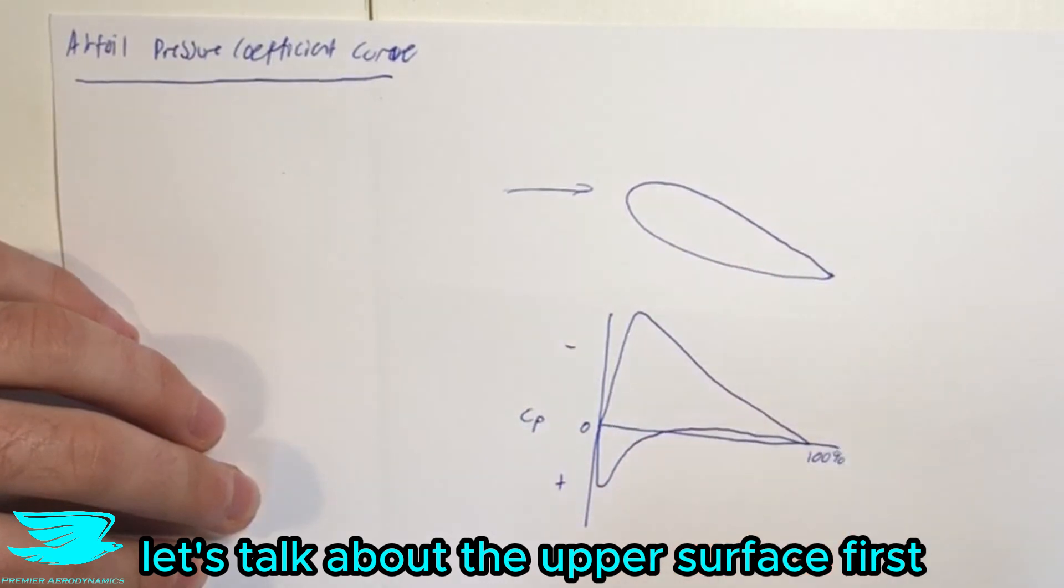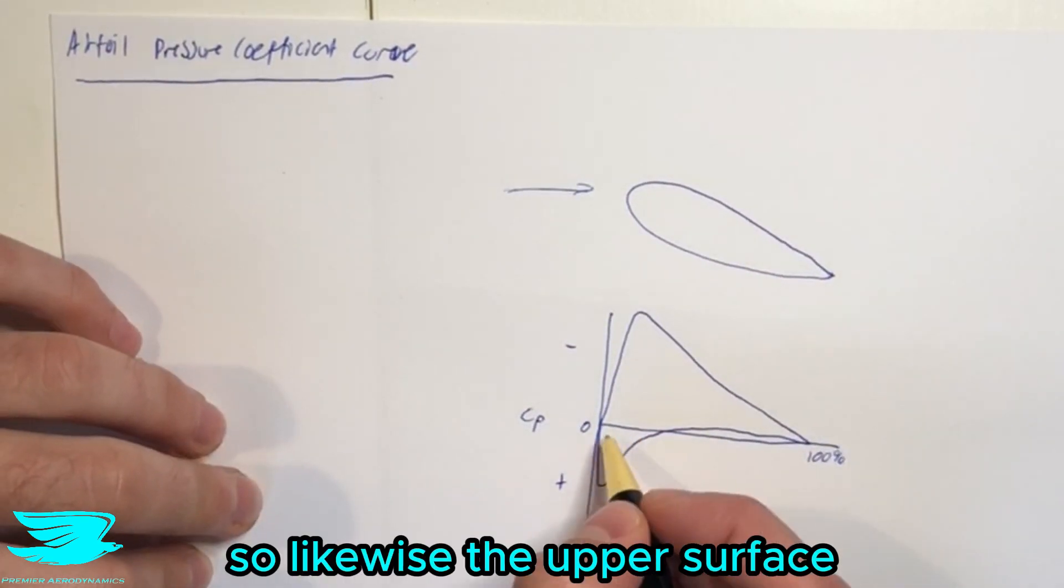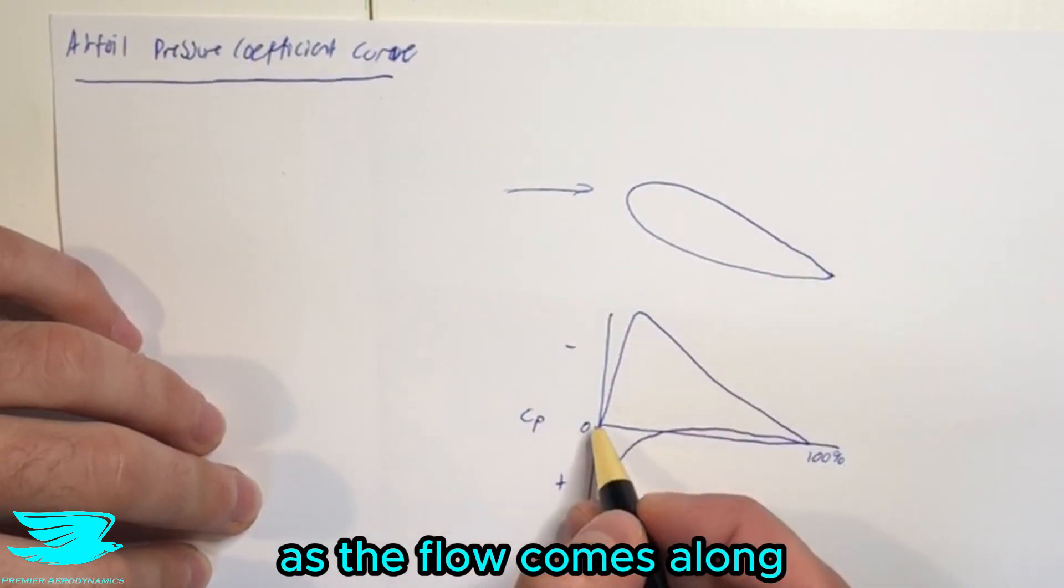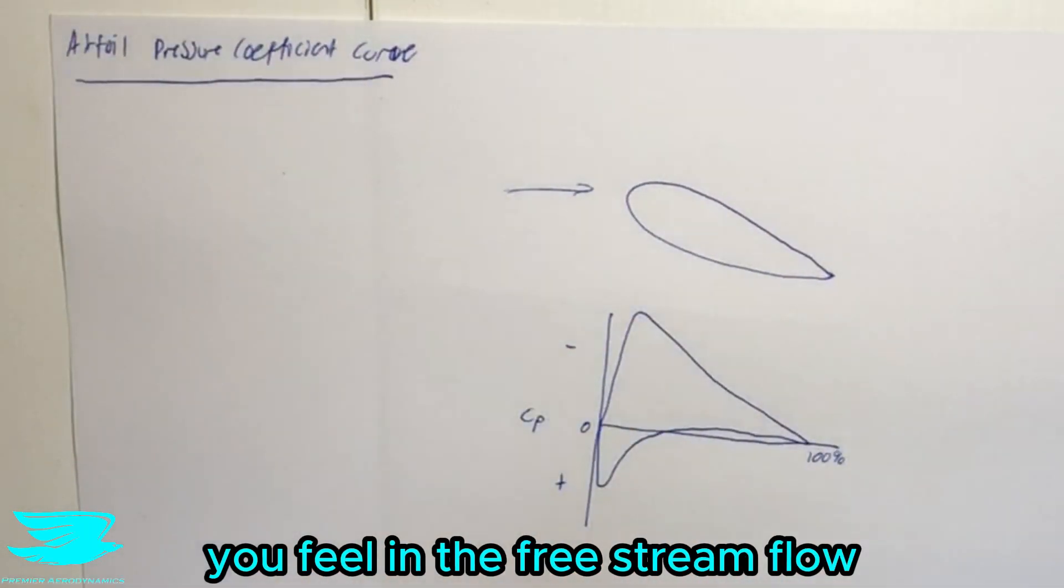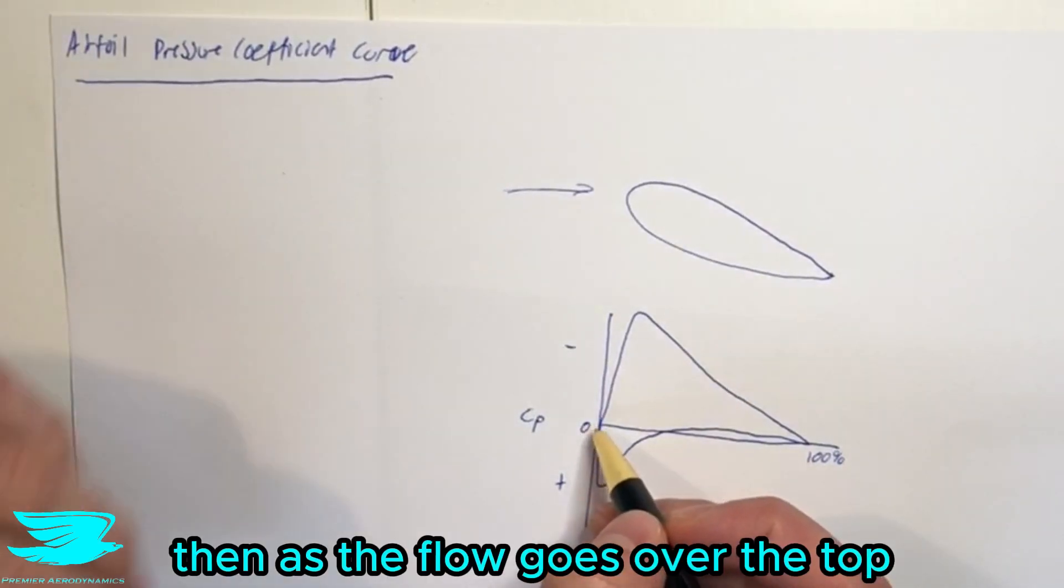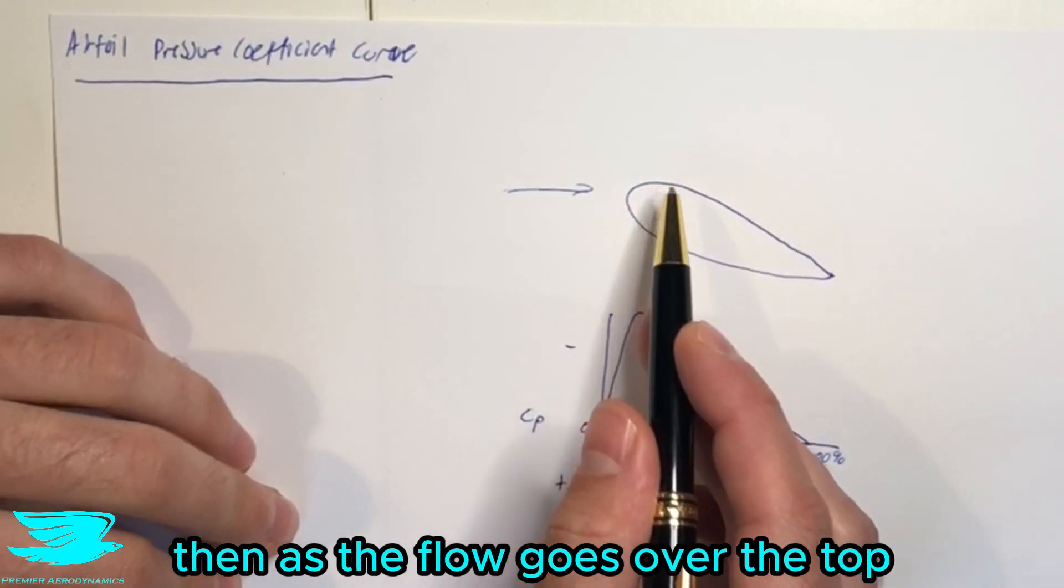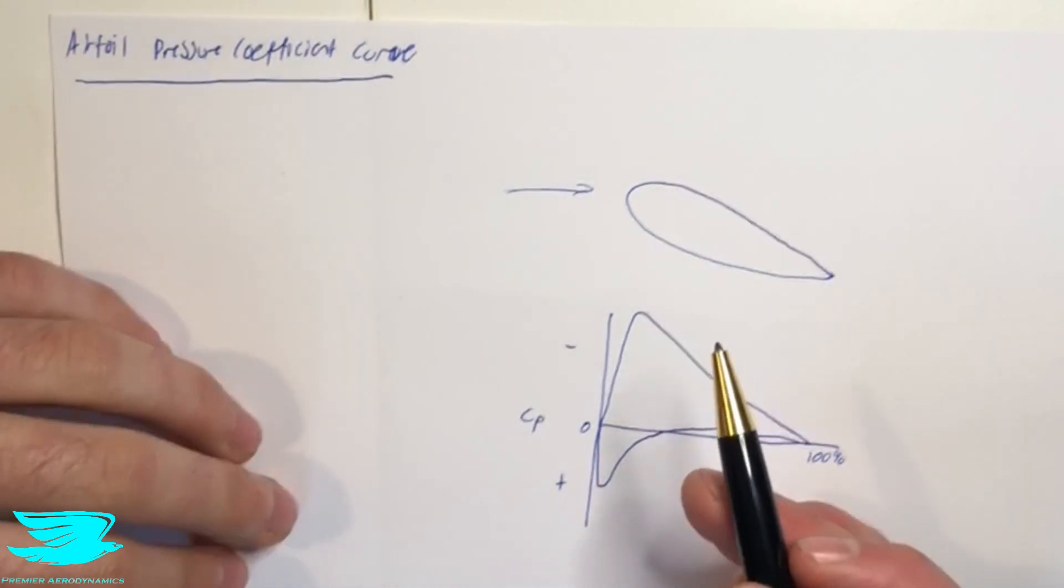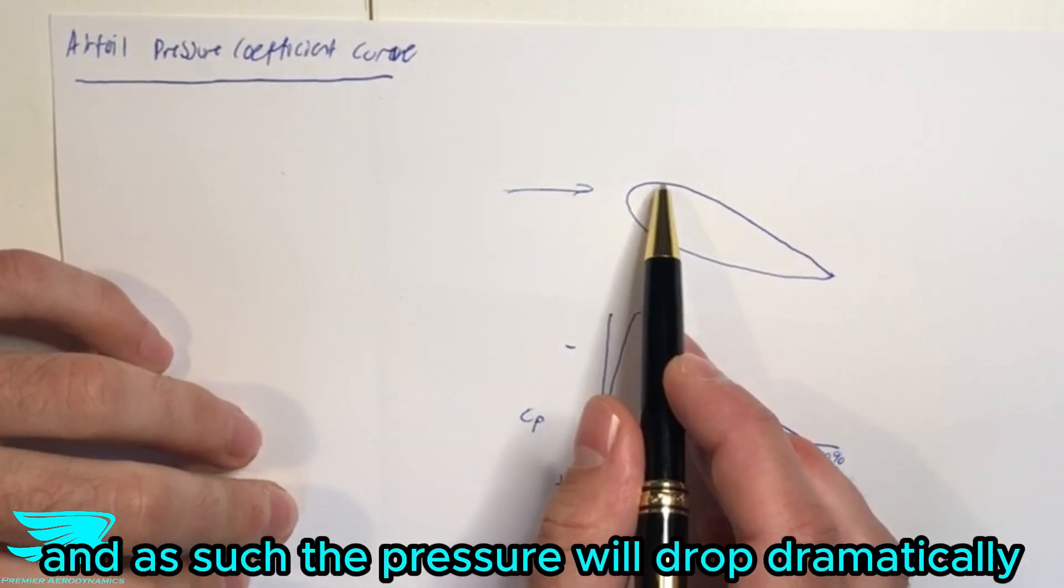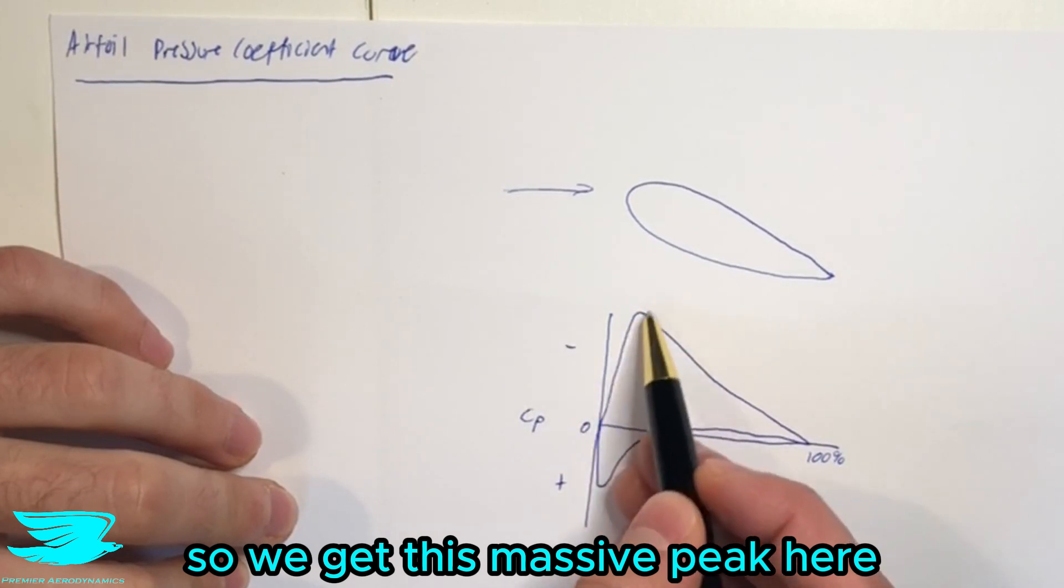Let's talk about the upper surface first. So likewise, the upper surface, as the flow comes along, the pressure starts at zero to begin with, which is a gauge. It's the same as what you feel in the free stream flow. Then as the flow goes over the top, we know that the flow accelerates. So it increases in velocity quite a lot. And as such, the pressure will drop dramatically. So we get this massive peak here.